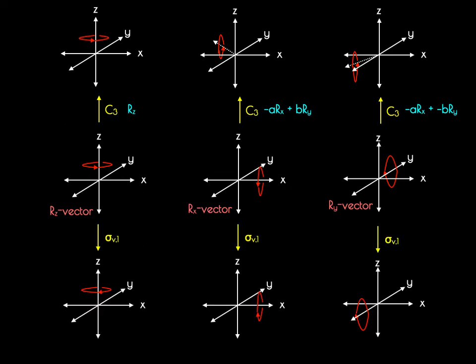Doing the sigma rotation, we find that the RZ vector goes from counterclockwise to clockwise rotation, RX also goes from counterclockwise to clockwise, but RY remains in a counterclockwise rotation. As with the linear vectors, we can treat Z apart from X and Y, but we must consider X and Y together as a pair.